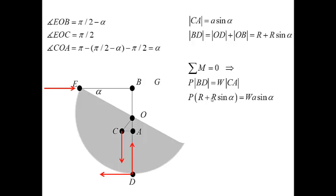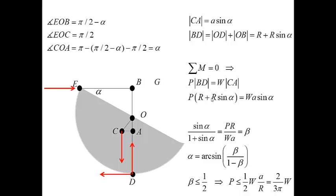Now, let me calculate the angle alpha. In order to do it, I will rewrite the last equation in this form and denote this ratio PR over WA by beta. And after simple rearrangement, I will get that alpha is equal to arc sine of beta divided by 1 minus beta.